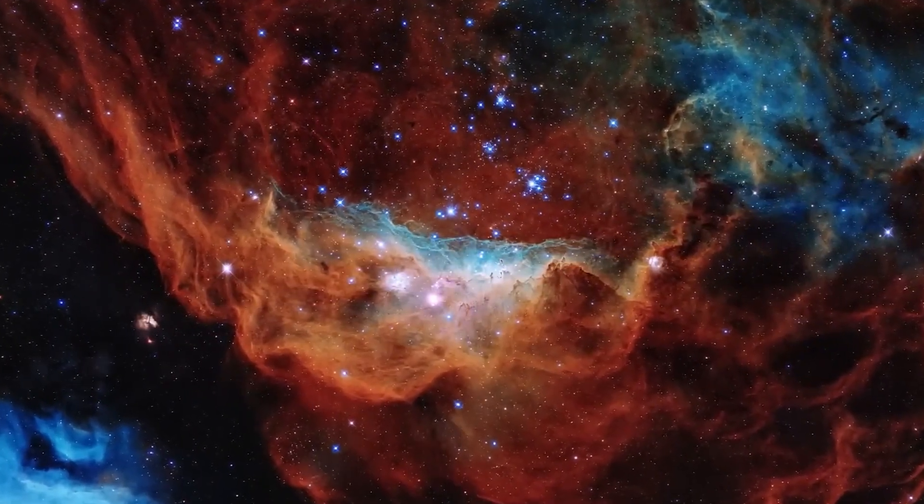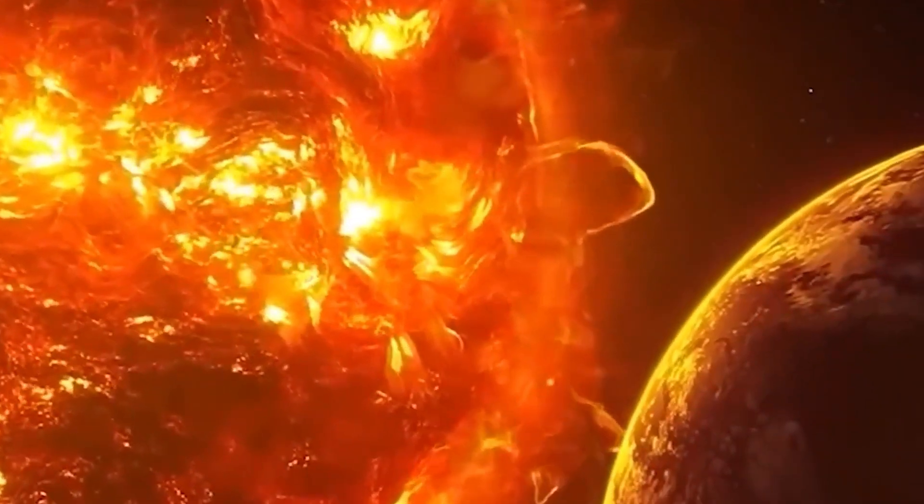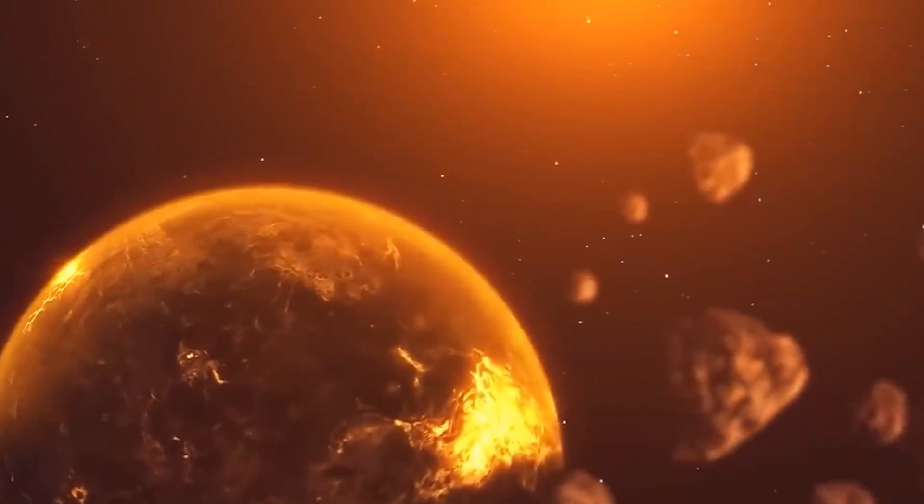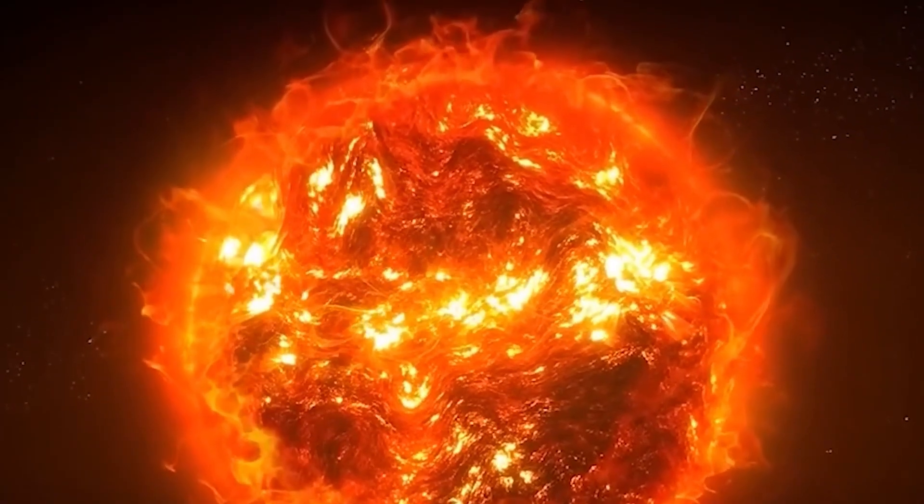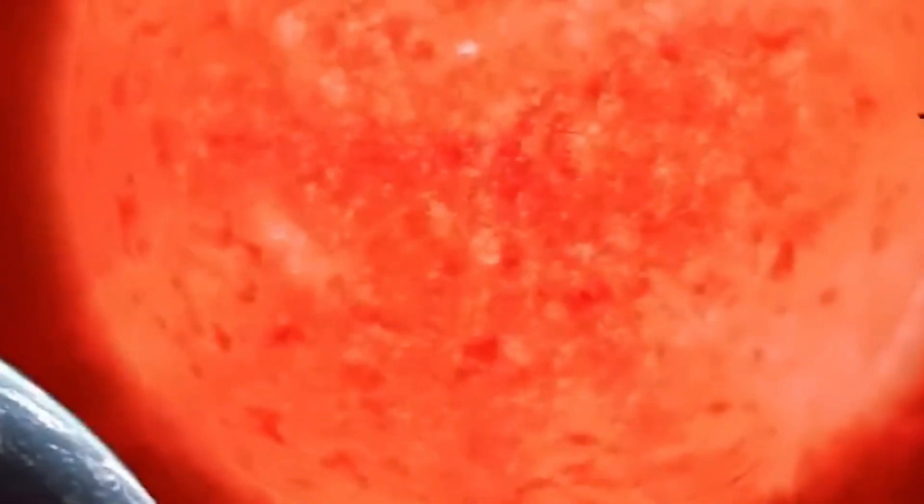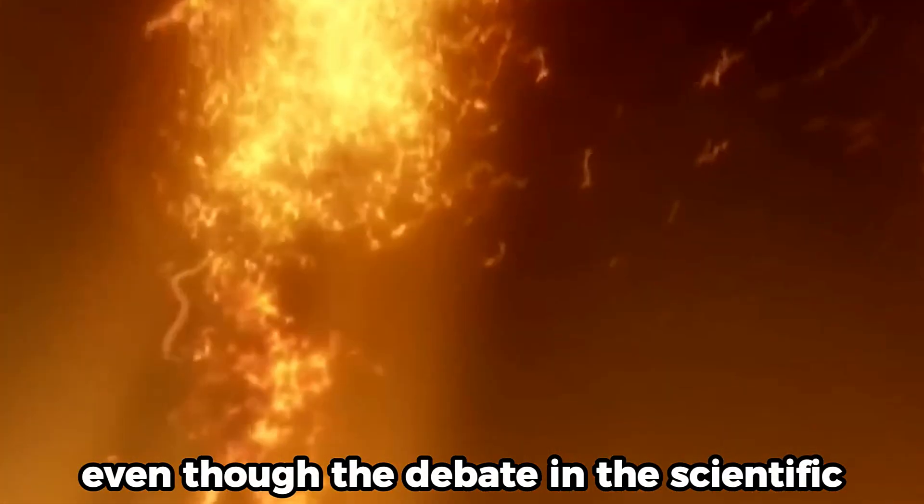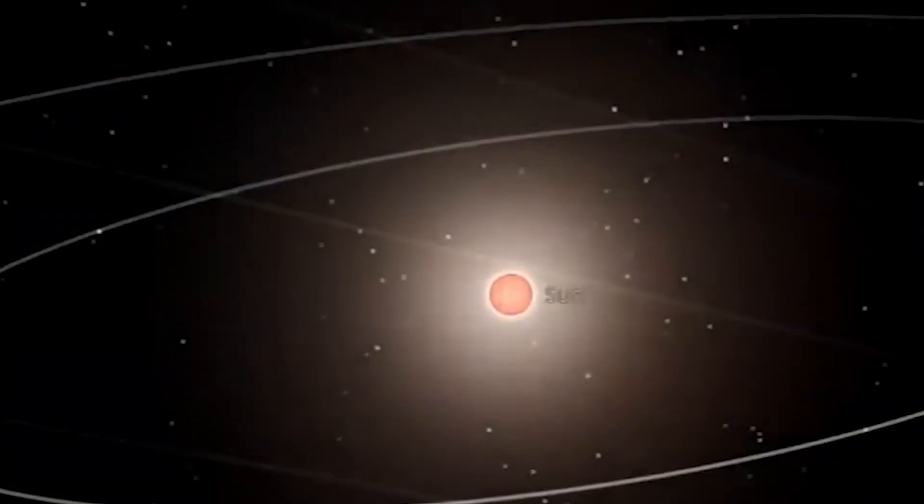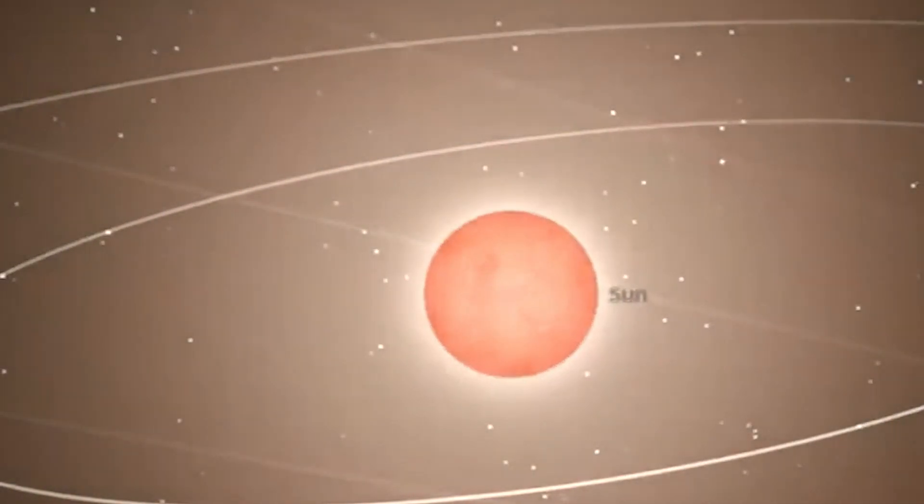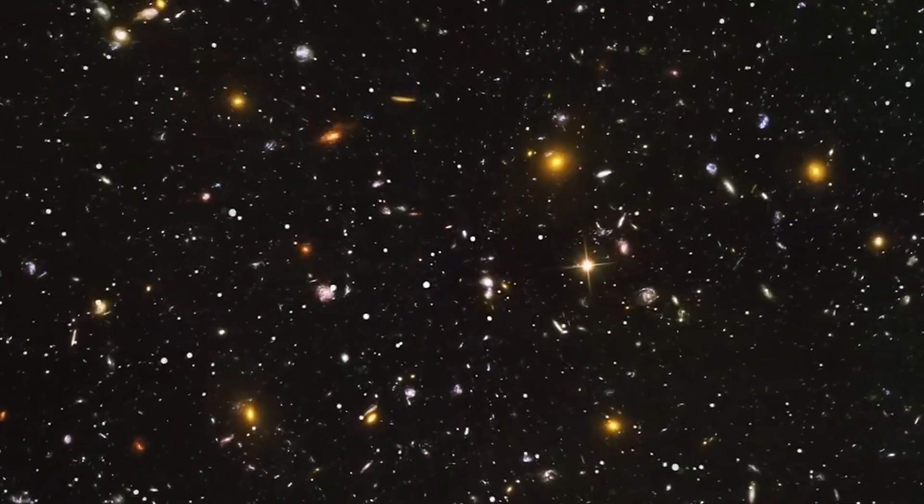One can draw parallels between the expansion of the Sun and the destiny that lies in store for Earth. As the Sun continues to undergo its red giant phase, it is anticipated that the gravitational force it exerts on the planets will decrease because the Sun is losing mass constantly. This may lead planets, including Earth, to spiral outward.